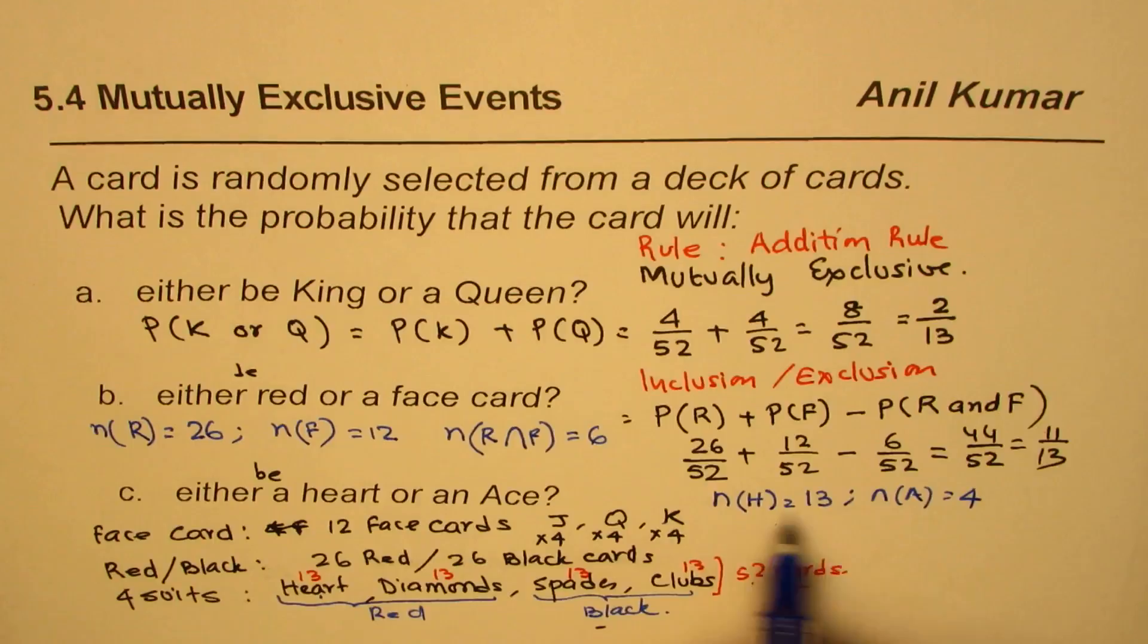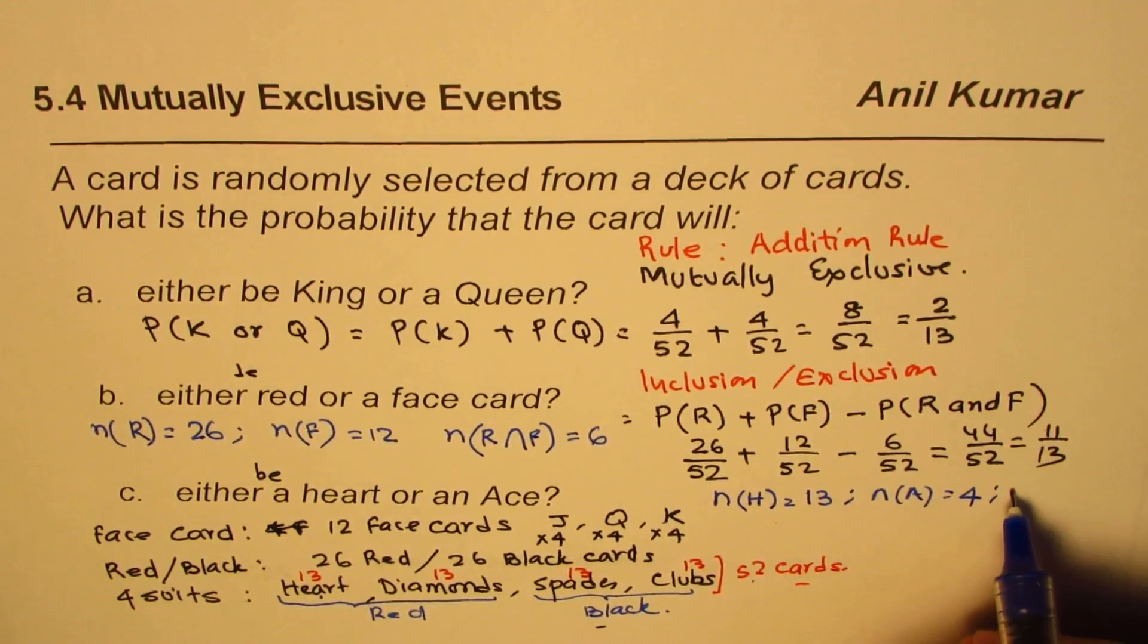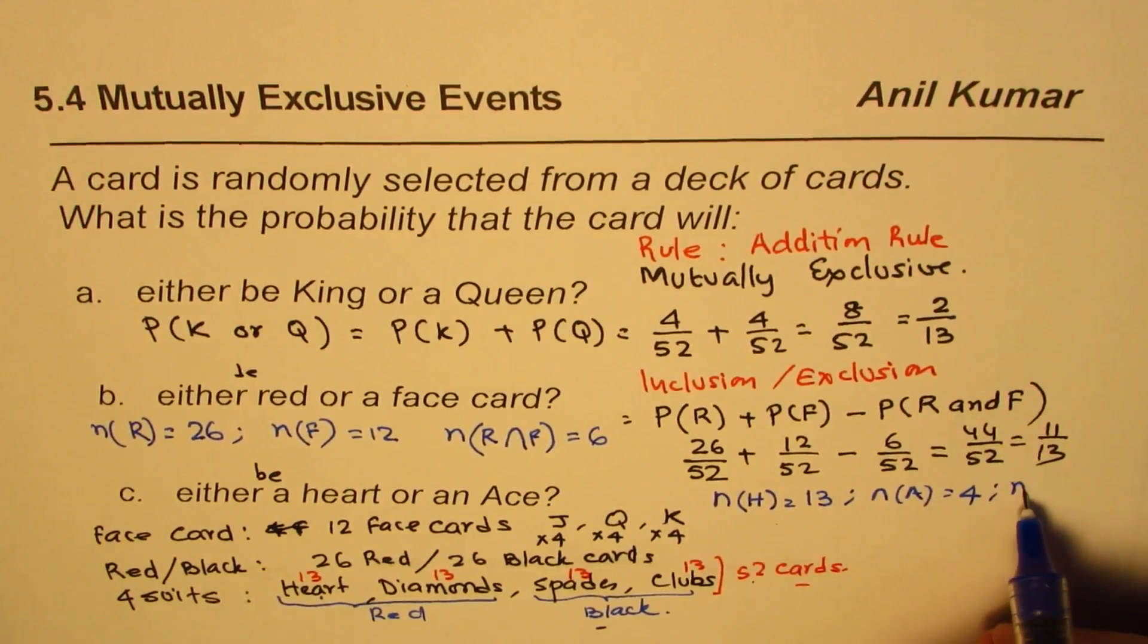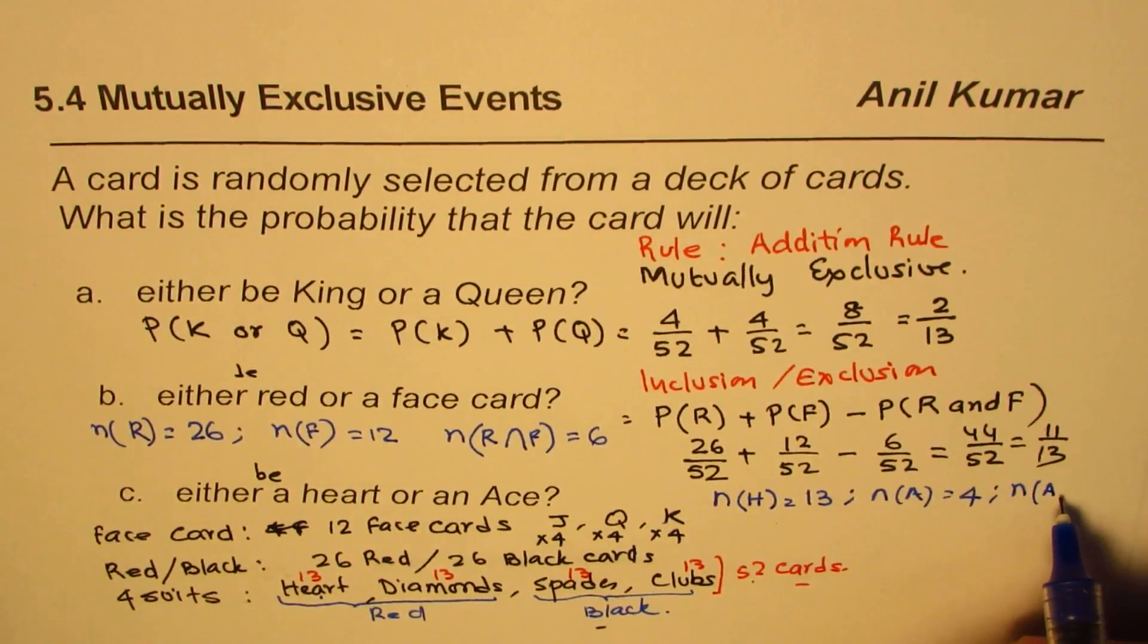So ace and hearts is 1. Therefore, we can write down the probability.